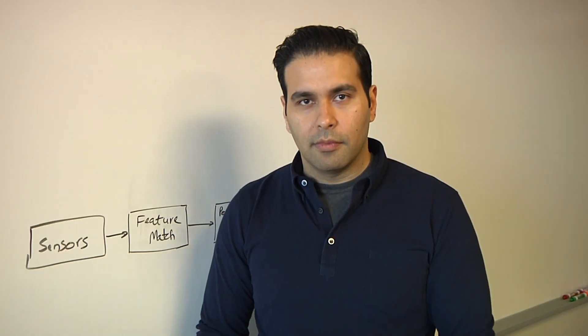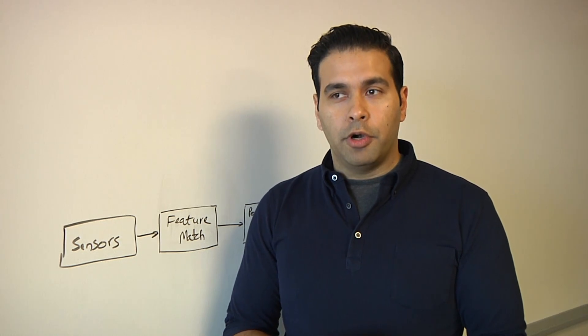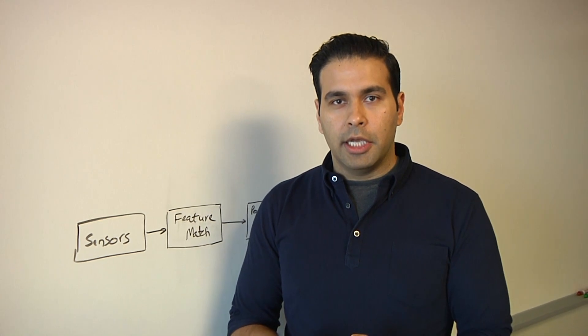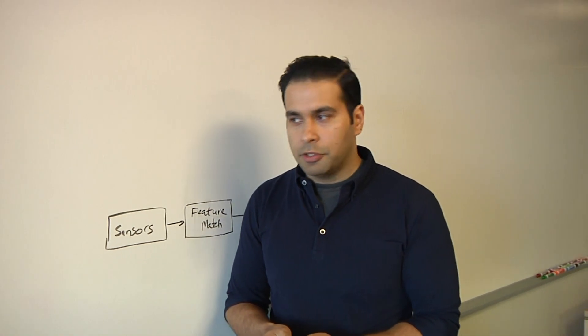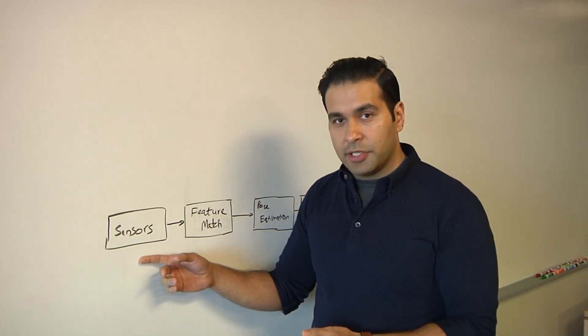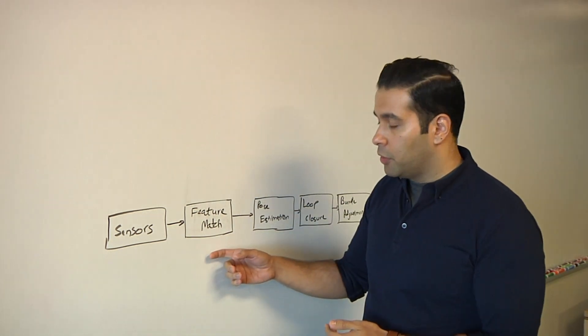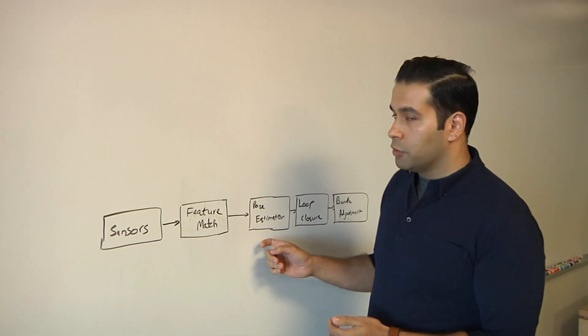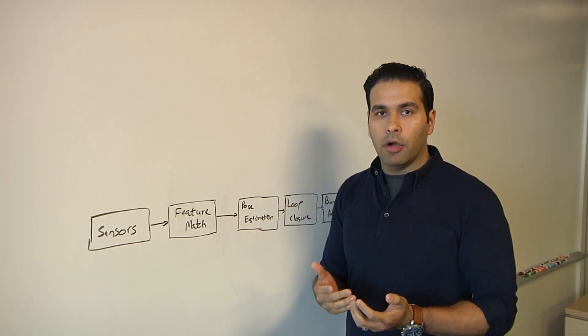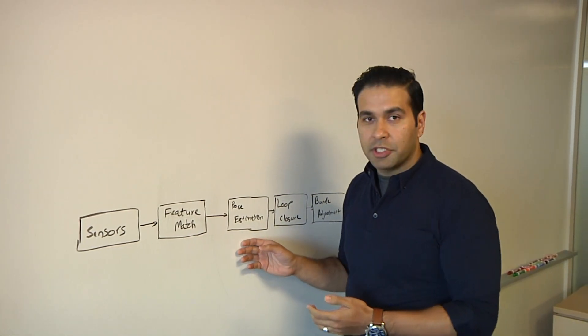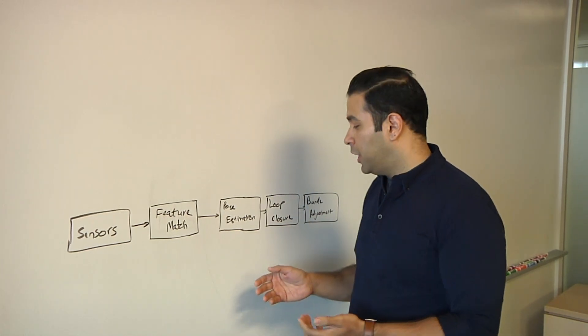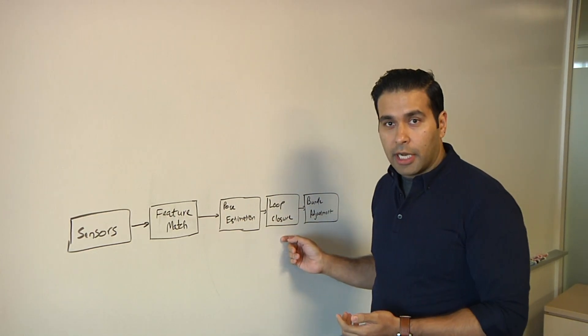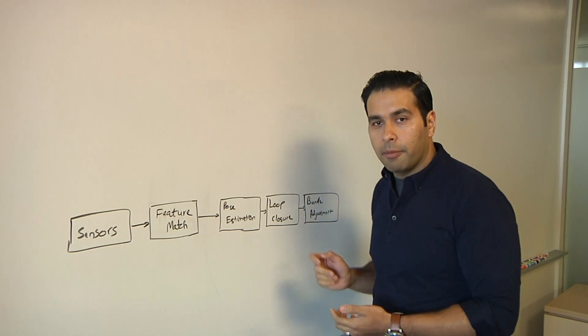So why don't you draw this out for us? Sure. So Amal, what are we looking at here? So here we're looking at a basic flow diagram for typically how SLAM is implemented in most applications that are used today. So we start first with a sensor that feeds in data to a feature matching block. That further is used to come up with the basic odometry, visual odometry, or pose estimation. And then you can do further refinements with loop closure and another stage following that called bundle adjustment.